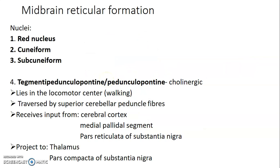The midbrain reticular formation has nuclei within the red nucleus, the cuneiform, and subcuneiform. The tegmenti pedunculopontine and pedunculopontine nuclei are cholinergic, lie in the locomotor center, and are traversed by superior cerebellar peduncle fibers. They receive input from the cerebral cortex, medial pallidal segment, and pars reticulata of the substantia nigra, and project to the thalamus and pars compacta of the substantia nigra.